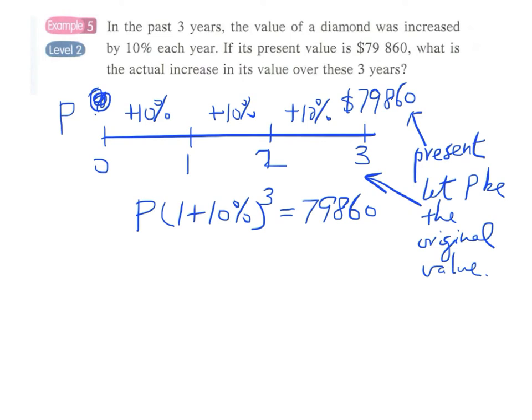If we use our calculator, we can easily solve P. We just divide $79,860 by (1 plus 10%) to the power 3, or we can write it down like this: 1 plus 10% will be 1.1 to the power 3. And it happens to be exactly $60,000.